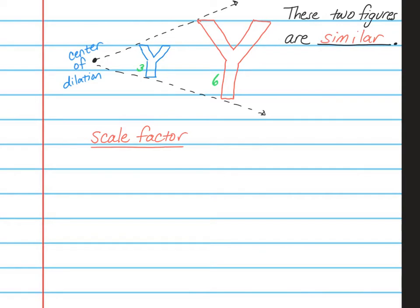So our scale factor is the image length over the pre-image length. So in our case, that would be six over three, and we would always want to reduce. This means that in this case, our red bigger y is two times bigger than our blue smaller y.